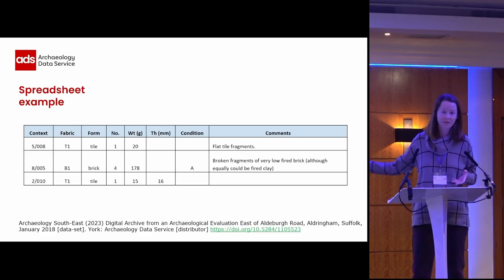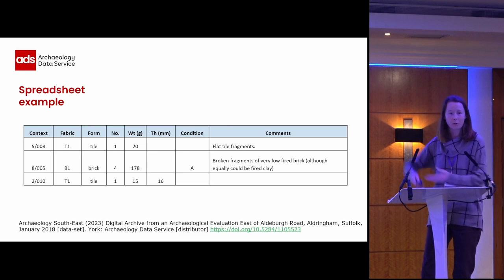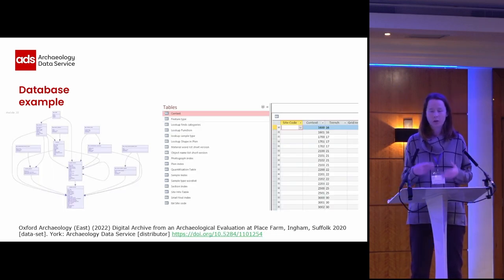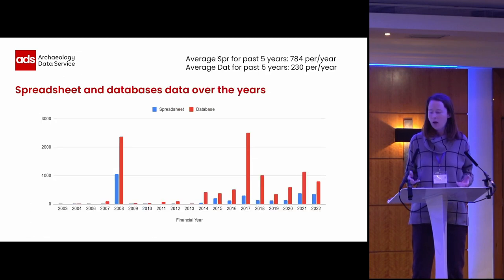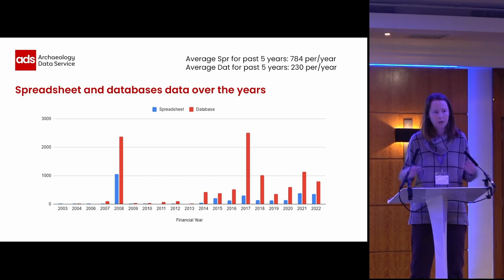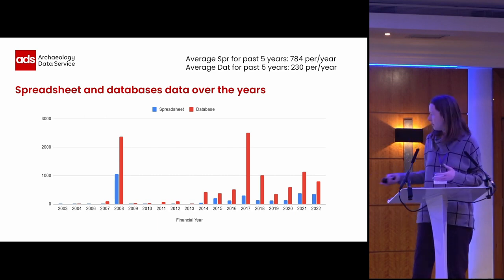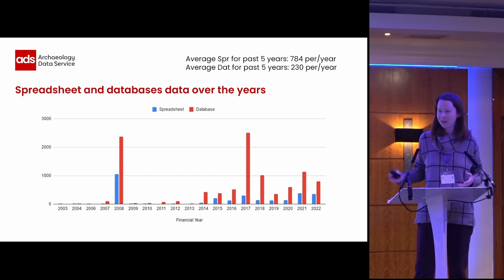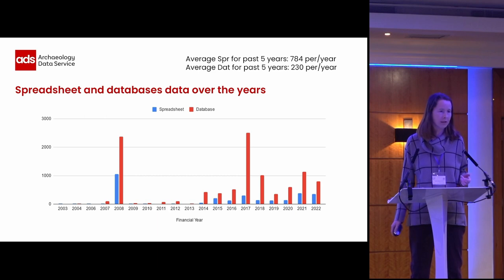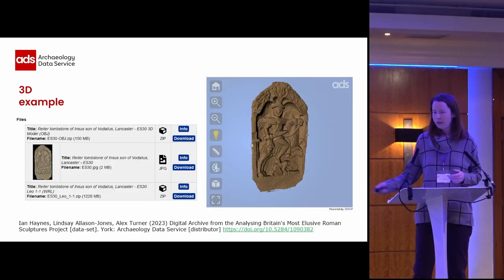We also get a number of spreadsheets — this is a simple example — but we also get databases, which can be highly complex and interlinked. While this is slightly misleading because you get more spreadsheets and the databases count as just one entry, the amount we're getting is increasing, but it's still nowhere near the amount we're getting for text and images.